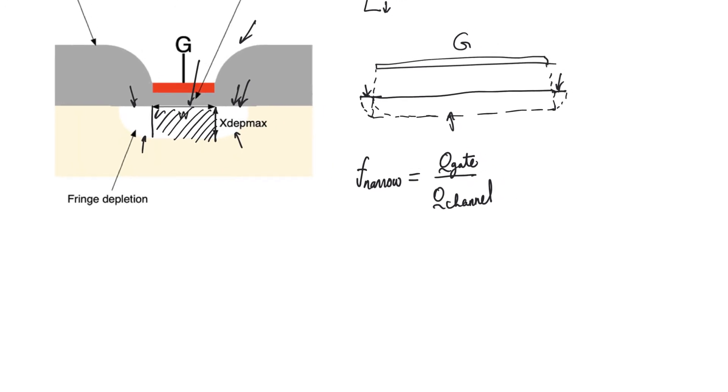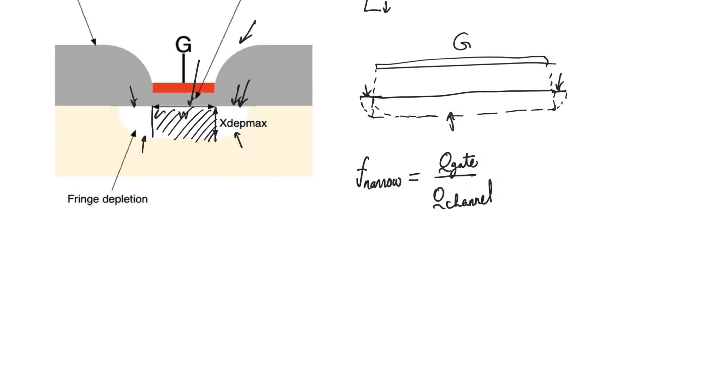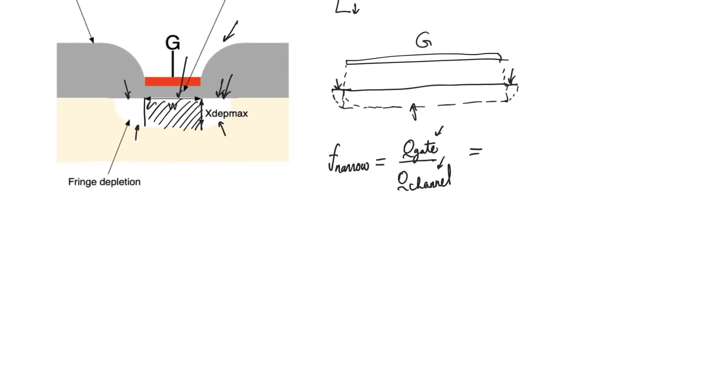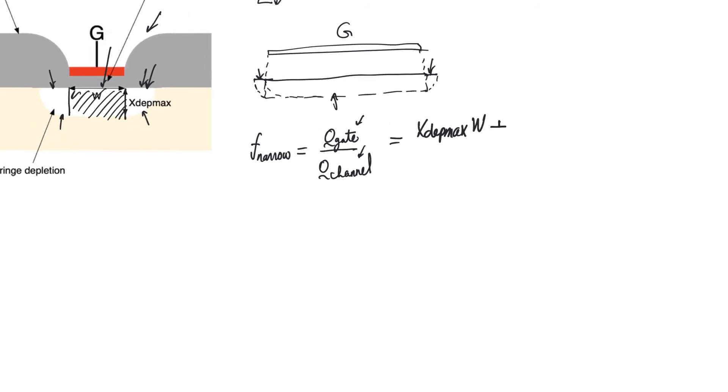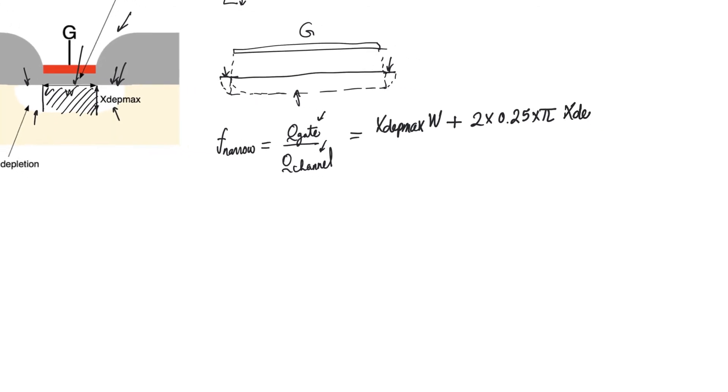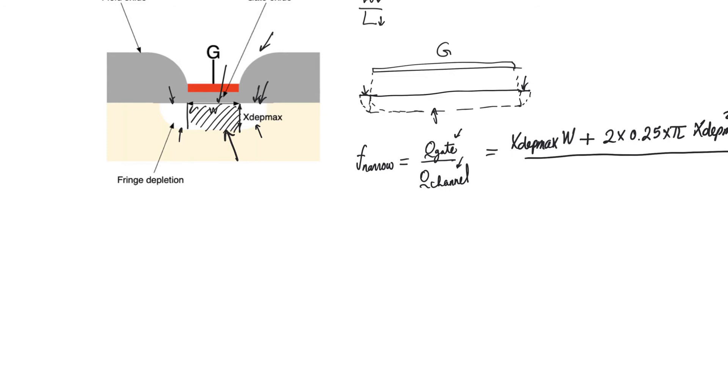The charge sharing factor is Q gate divided by Q channel. As with the charge sharing factor in drain-induced barrier lowering, you can forget about the height of the prism and the concentration of charges. You just have to divide the cross-sectional areas because charge concentration and height is the same for both Q gate and Q channel. Q in the gate is the area of the rectangle plus the area of the two quarter circles. So it's X depletion max multiplied by W plus two times a quarter of the area of one of the circles, which is pi times X depletion max squared. This is divided by Q in the channel, which is the useful depletion charge in the rectangle alone, which is X depletion max multiplied by W.